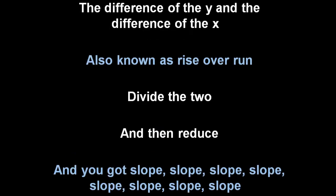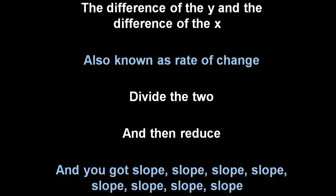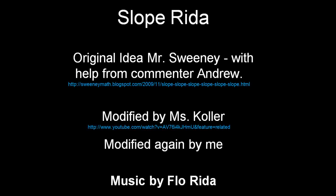Difference of the y and the difference of the x, also known as rise over run. Divide the two and then reduce, and you got slope, slope, slope. Difference of the y and the difference of the x, also known as rate of change. Divide the two and then reduce, and you got slope, slope, slope. Thank you.